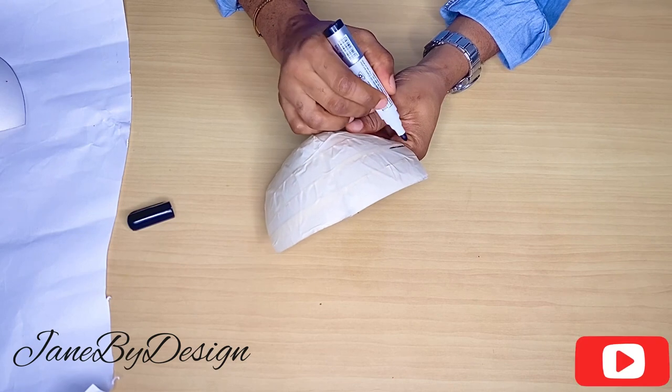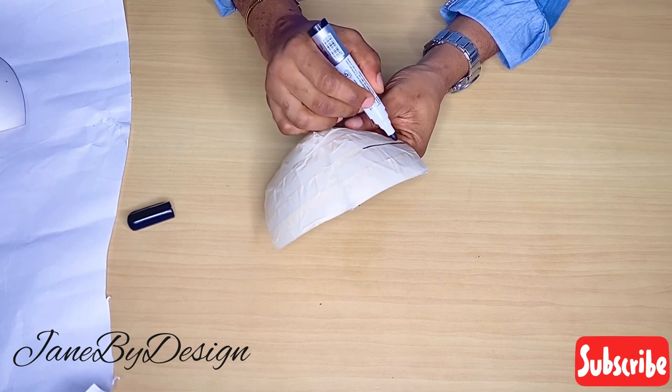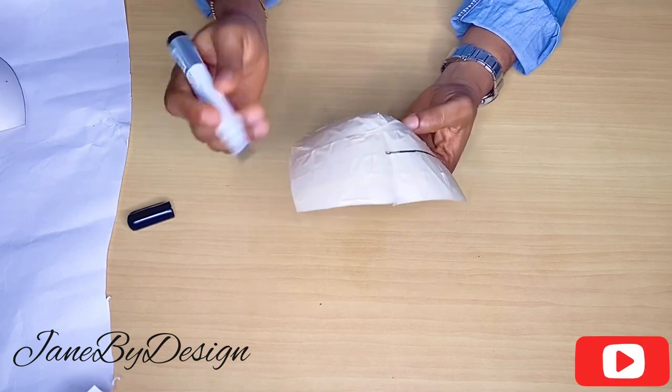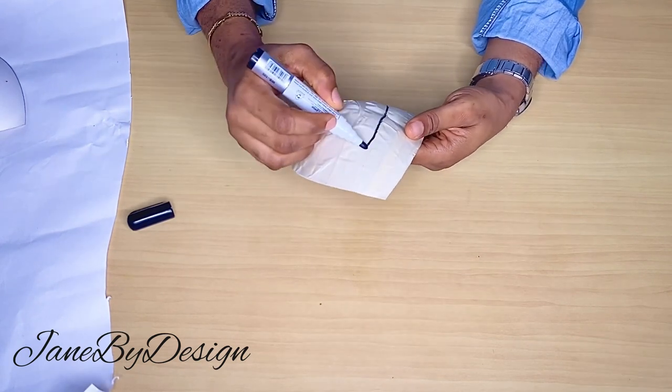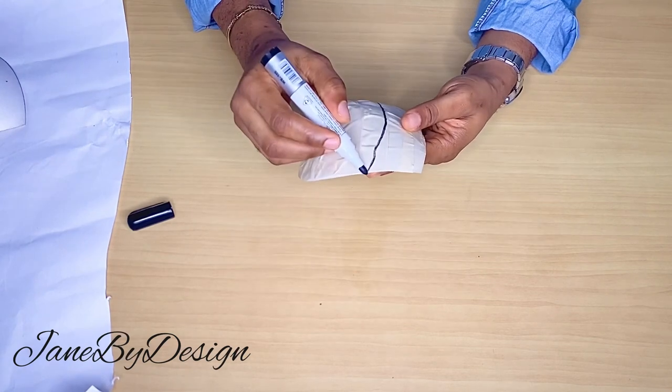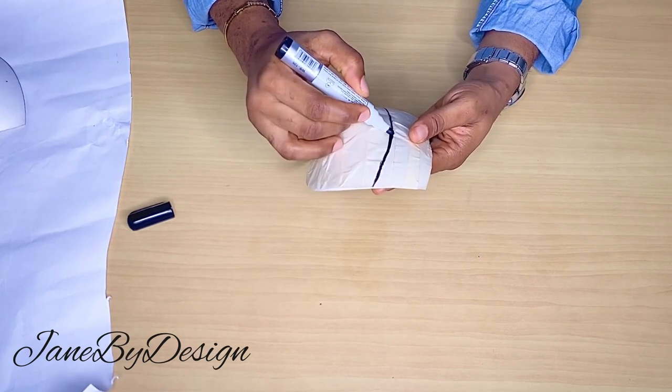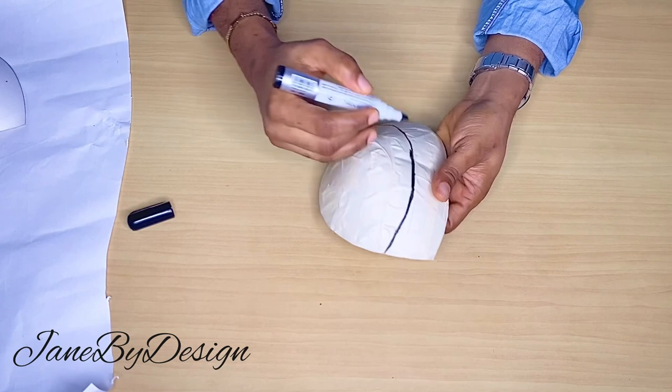You don't necessarily have to measure this, but if you want to, you can go ahead and measure it out. So I'm going to be marking out a three-piece corset on this corp. So I'm just going to go ahead and use my marker now to mark out the shape of the corset that I'm going for. I've marked out the top and then I'm going to mark out the center.